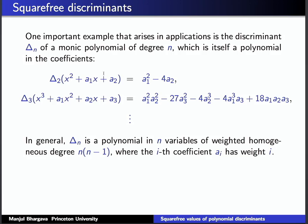In general, Δₙ, the discriminant of a degree n monic polynomial, is a polynomial in n variables, and its weighted degree is n(n−1) if you view the i-th coefficient aᵢ as having weight i. In the degree 3 case, each term has degree 6 — so you have a₃ squared and a₂ cubed, all degree 6. The discriminant is defined as the square of the product of differences of roots, expressible as a weighted homogeneous polynomial of degree n(n−1).